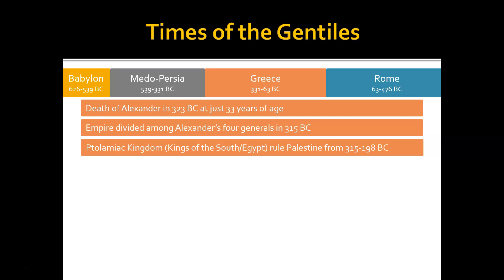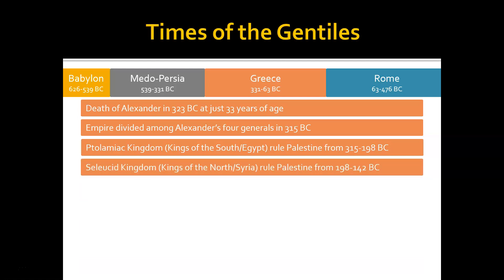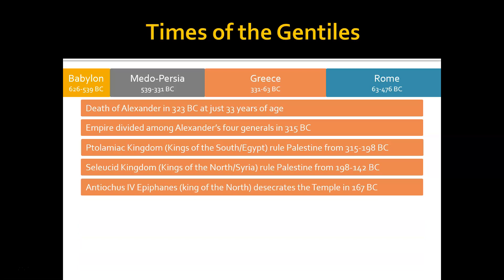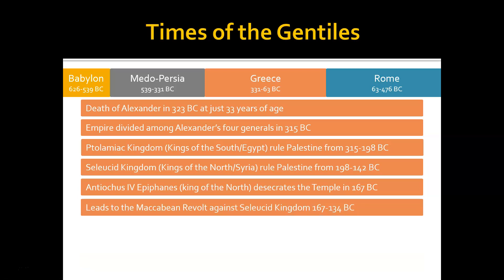The two kingdoms that have direct impact upon the nation of Israel are the Ptolemaic kingdom — the kings of the south, the Greek empire ruling North Africa and Egypt — which ruled Palestine from 315 to 198 BC. And the Seleucid kingdom — the kings of the north, or of Syria — ruled Palestine from 198 to 142 BC. Antiochus Epiphanes was the king of the north who desecrated the temple in 167 BC, leading to the Maccabean revolt against the Seleucid kingdom. First and second Maccabees, or Josephus's writings, are where you'll want to read to learn what was happening during this period.